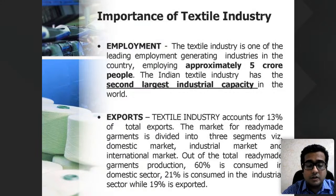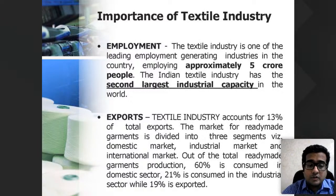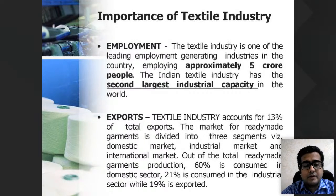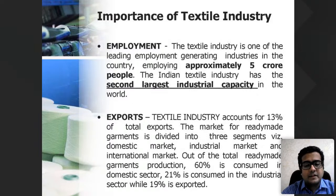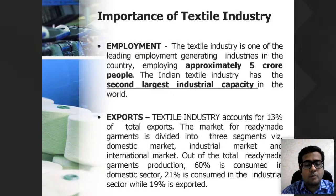The textile industry employs approximately 5 crore people and has the second largest industrial capacity in the world. Exports from the textile industry account for 13% of total exports of the country. The ready-made garments of India are divided into three segments: domestic market, international market, and industrial market. Around 19% of total production is exported.